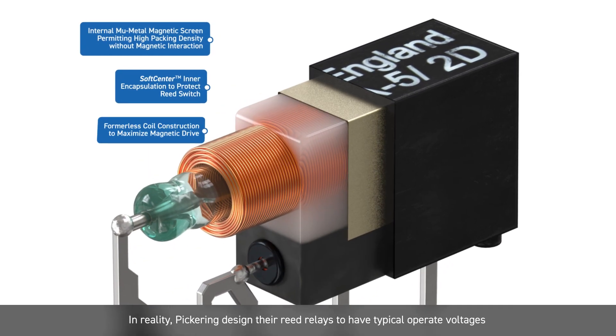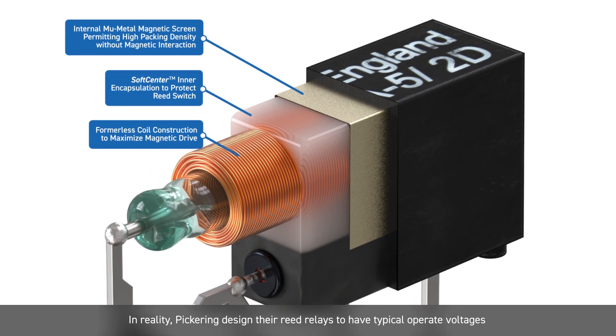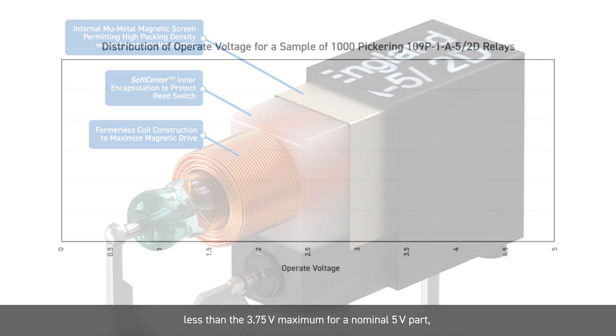In reality, Pickering designed their reed relays to have typical operate voltages less than the 3.75 volt maximum for a nominal 5 volt part.